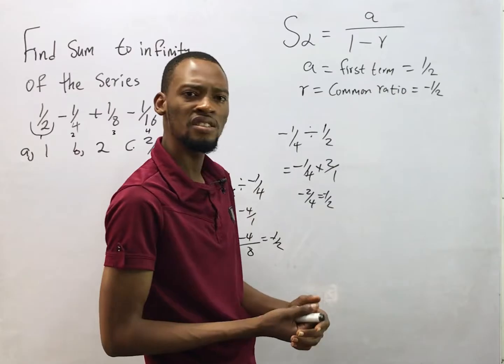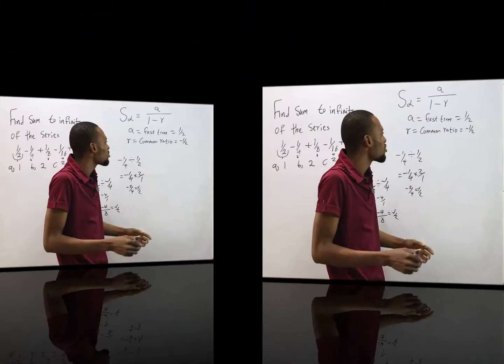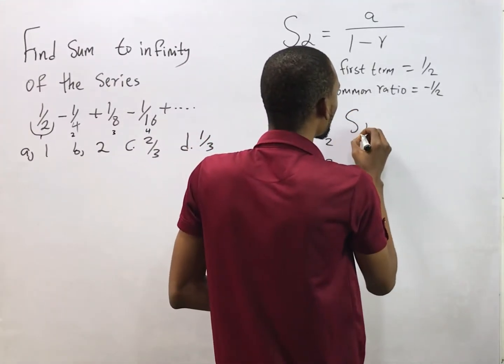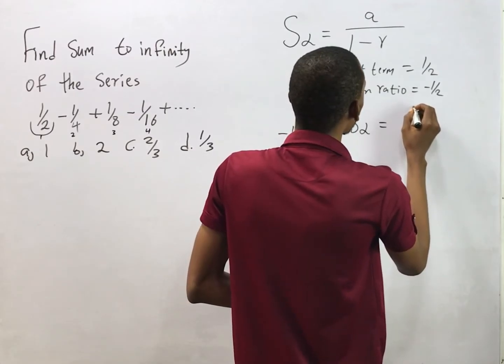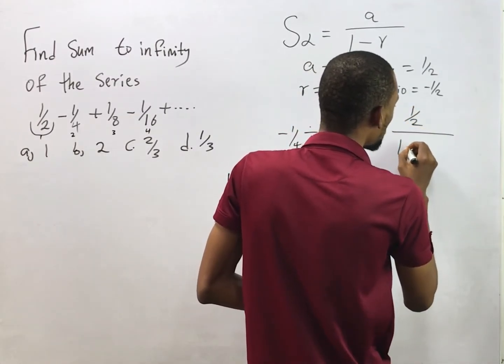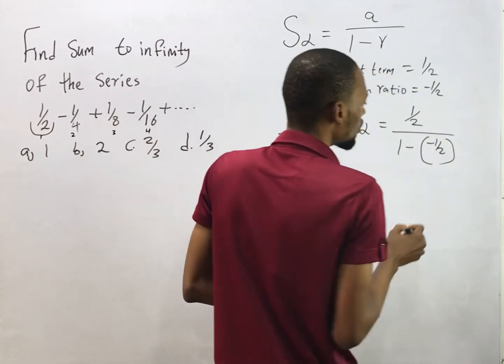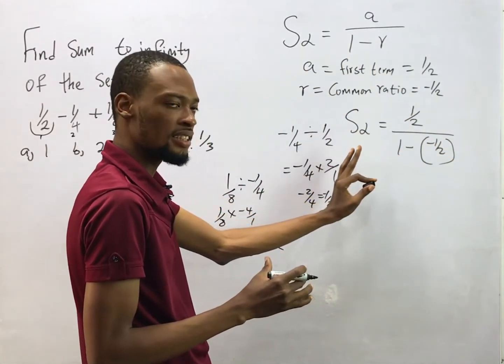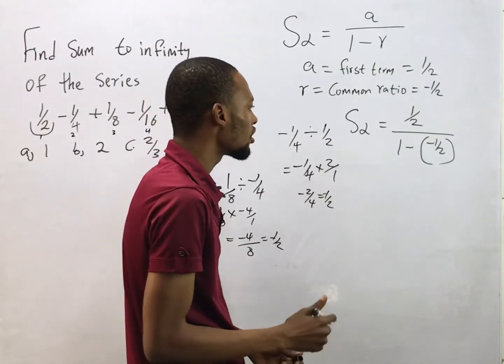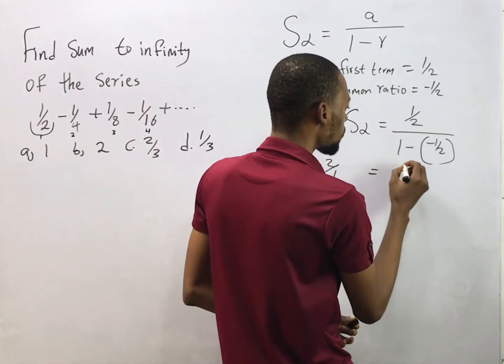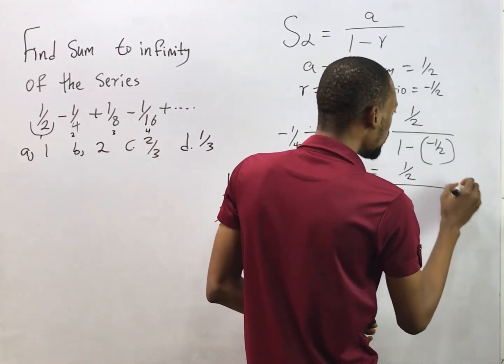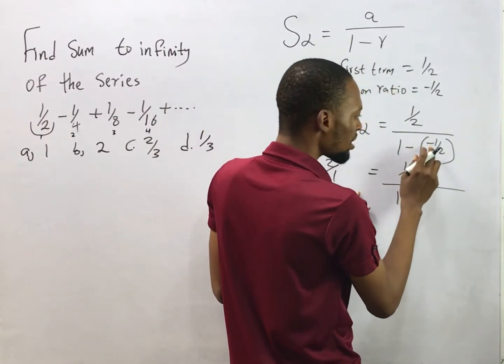Now we've gotten everything we need. We simply say our sum to infinity equals first term 1/2, then 1 minus... We already have -1/2 here so you have to take note of that sign to avoid errors.